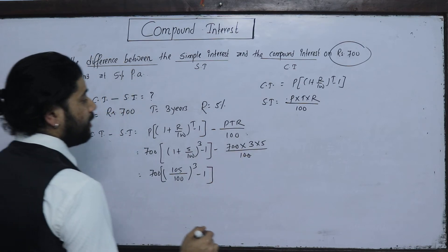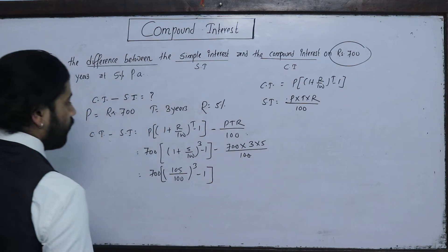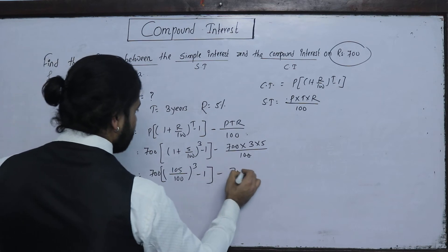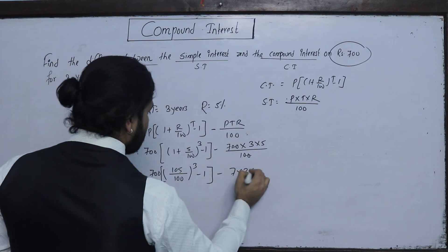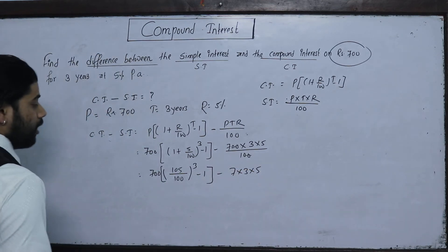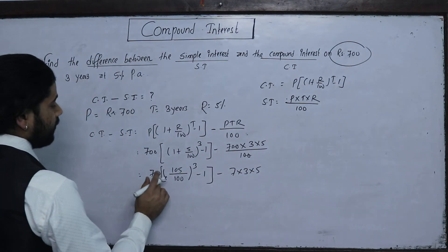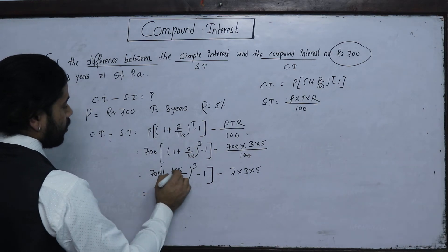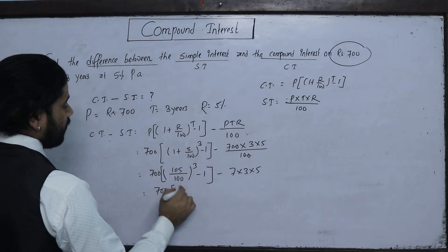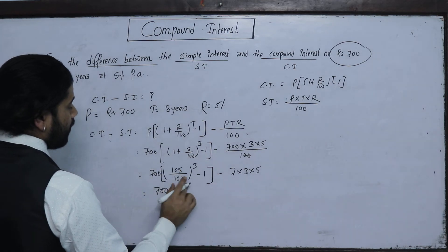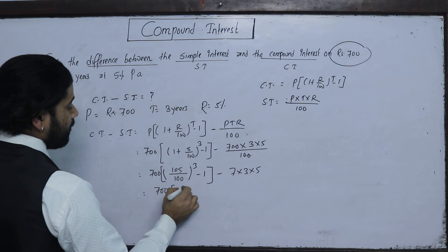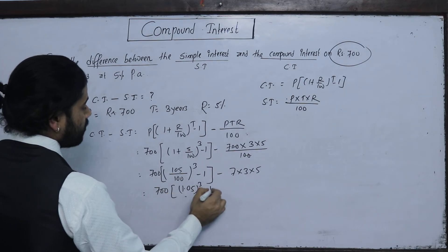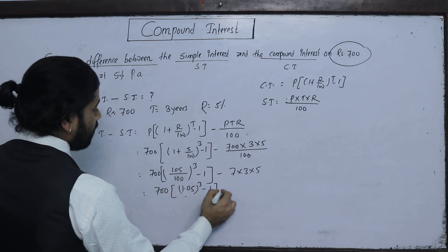We compute 7 × 3 × 5, giving us 700. Then (100 + 5)/100 = 1.05 to the power 3, minus 1, minus the simple interest term. Let y = (1.05)^3, so we need to evaluate this using logarithms.